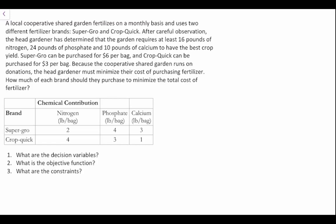A local cooperative shared garden fertilizes on a monthly basis and uses two different fertilizer brands: Super Grow and Crop Quick. After careful observation, the head gardener has determined that the garden requires at least 16 pounds of nitrogen, 24 pounds of phosphate, and 10 pounds of calcium to have the best crop yield.